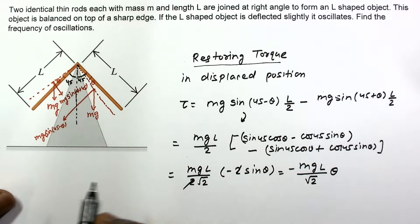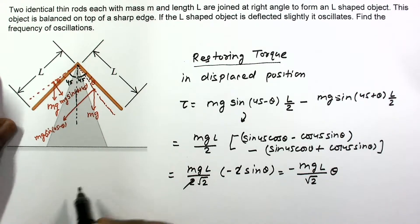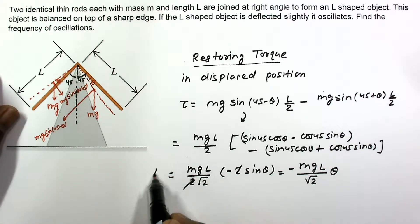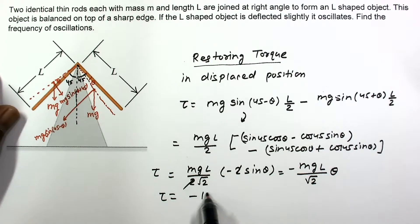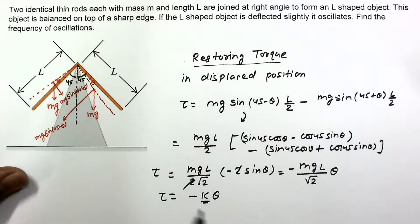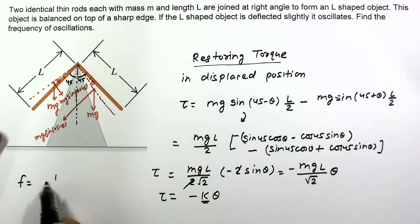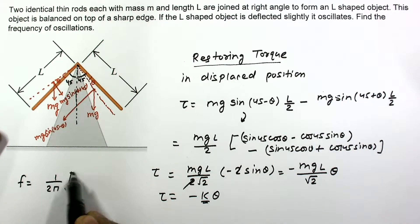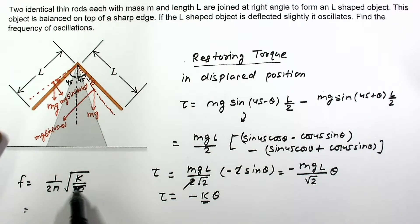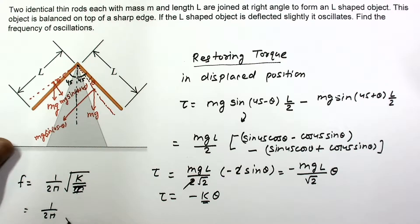To find the time period, we compare this to torque = −kθ, where k is the torsional constant. The frequency formula for angular SHM is f = (1/2π)·√(k/I), where I is the moment of inertia. Here k = MgL/√2.